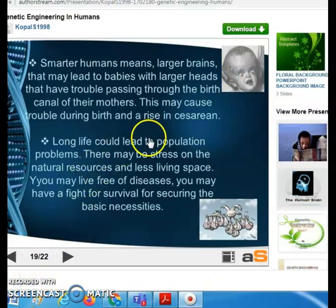Smarter human beings means their brain will be larger, and that will have difficulty in natural birth. It will be difficult to get this head out from the birth canal of mother, so that will lead to more cesarean C-sections.